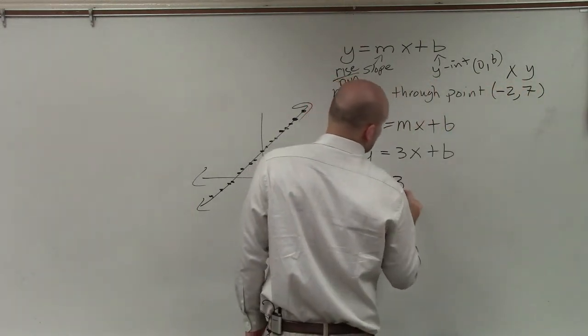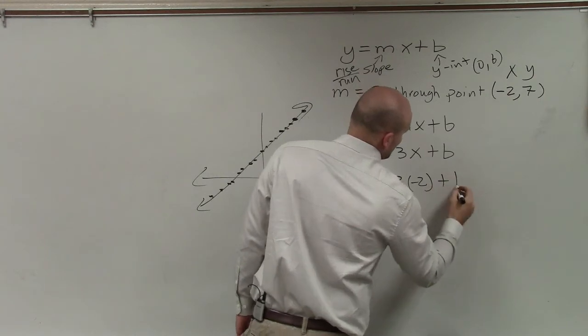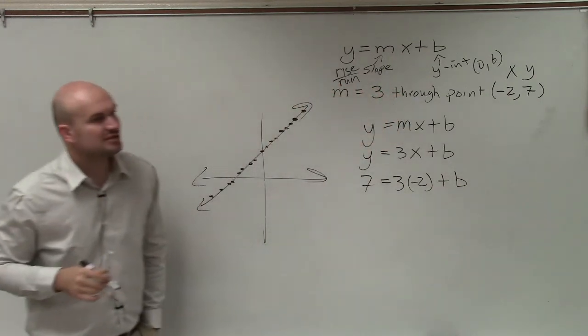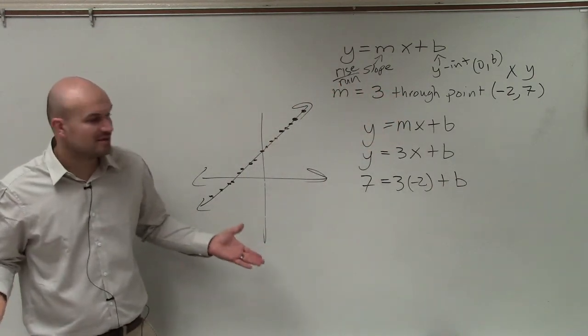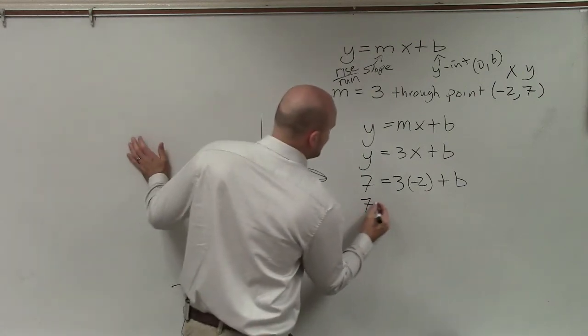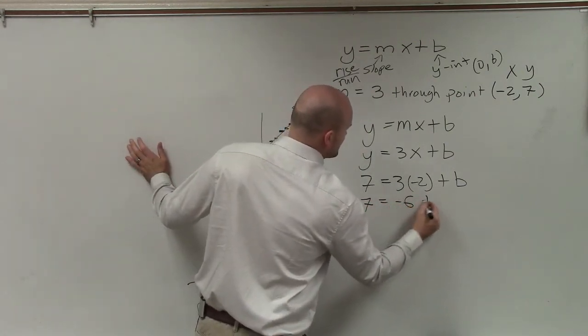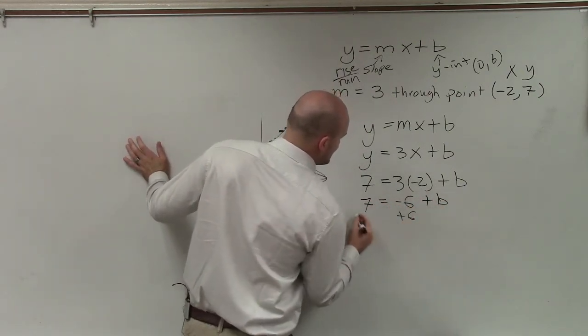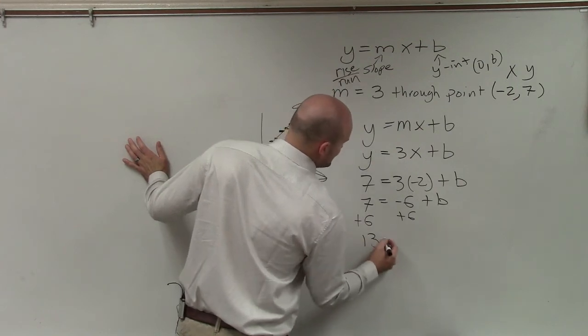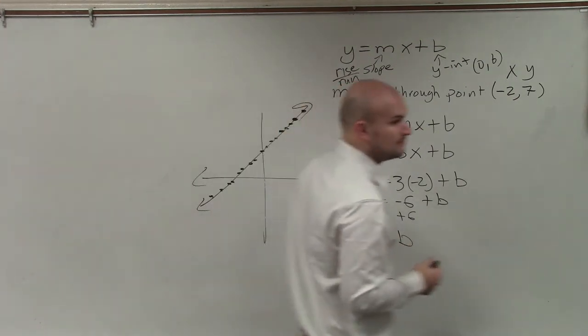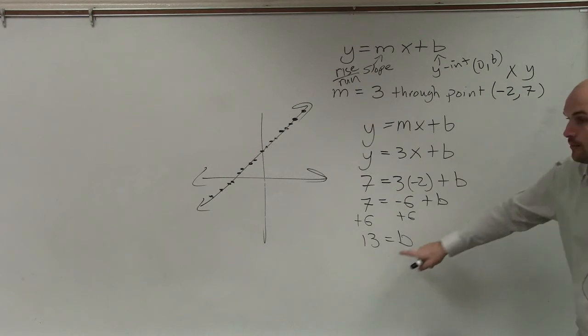And by doing that, I now produce an equation that only has one variable left, which is b, which I need to determine the value for. So I have 7 equals negative 6 plus b. Add 6, add 6, 13 equals b. So now I know my y-intercept.